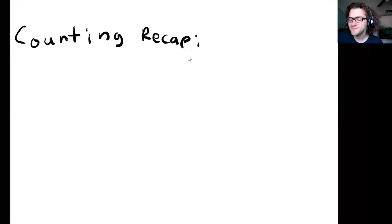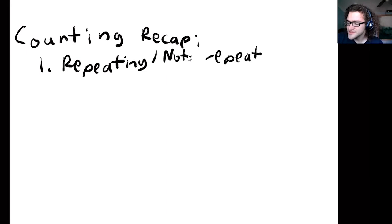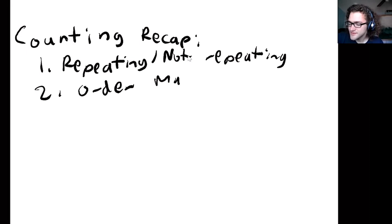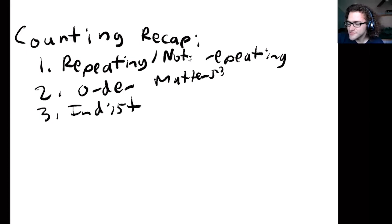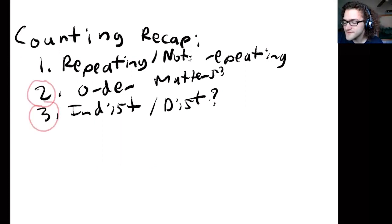As a quick overview, the three main questions we have with counting are: are we repeating or not repeating? Do we care about the order — does order matter? And can we have things that are indistinguishable or distinguishable — can I tell things apart? We'll deal with these questions today, counting things that are not repeating, but we have to think about whether we need to order them and whether we can distinguish between them.